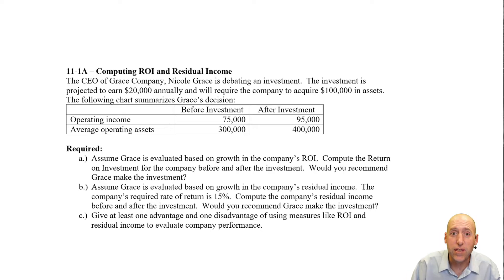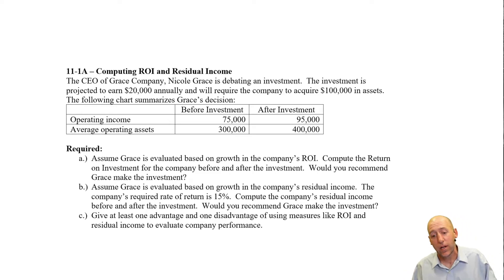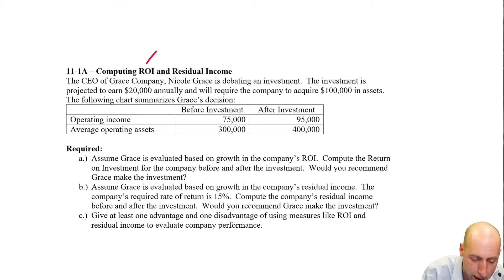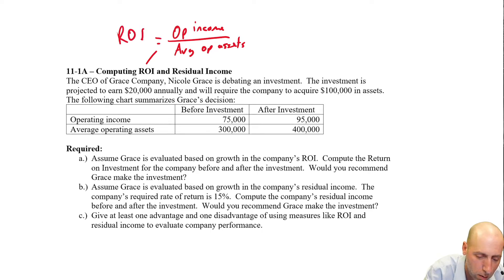These summary measures are pretty useful, but this problem also illustrates a problem with some of them. We'll compute ROI first. The formula for ROI is operating income divided by average operating assets.